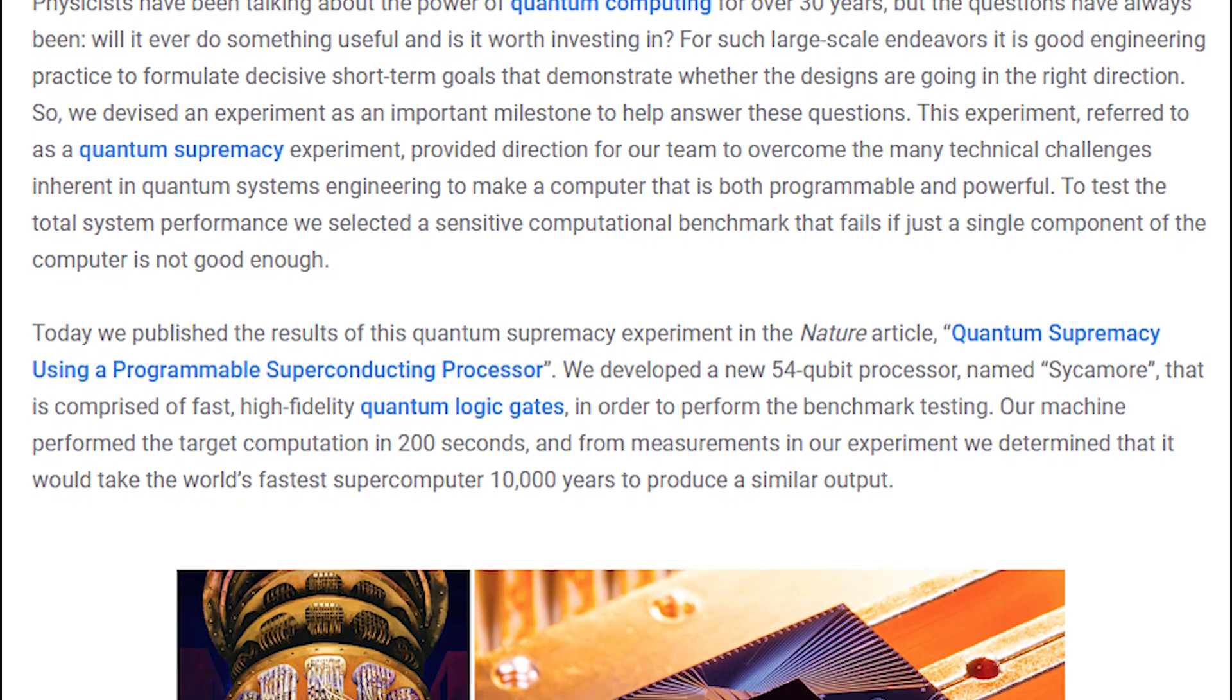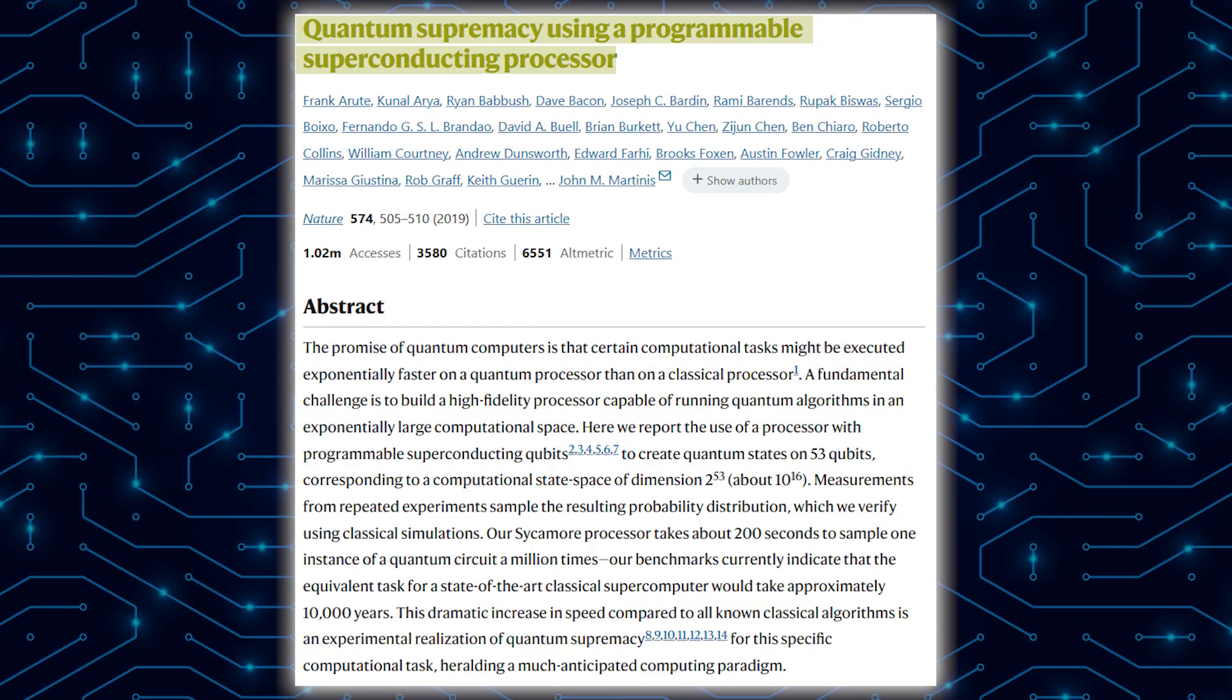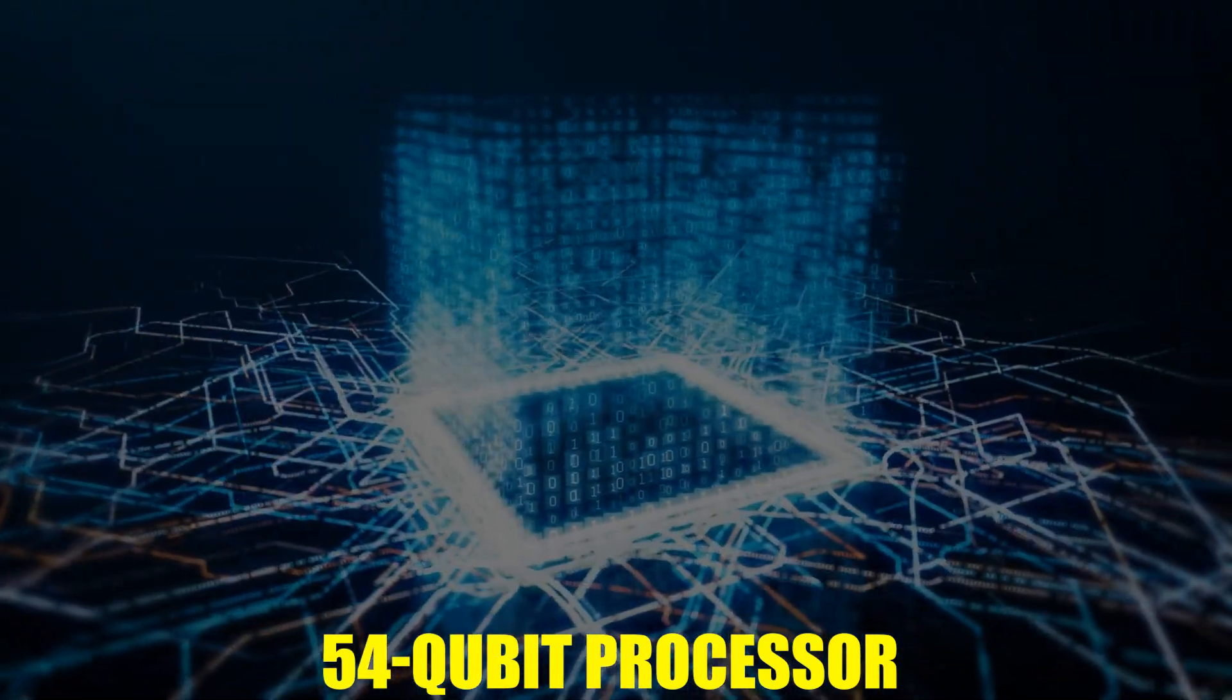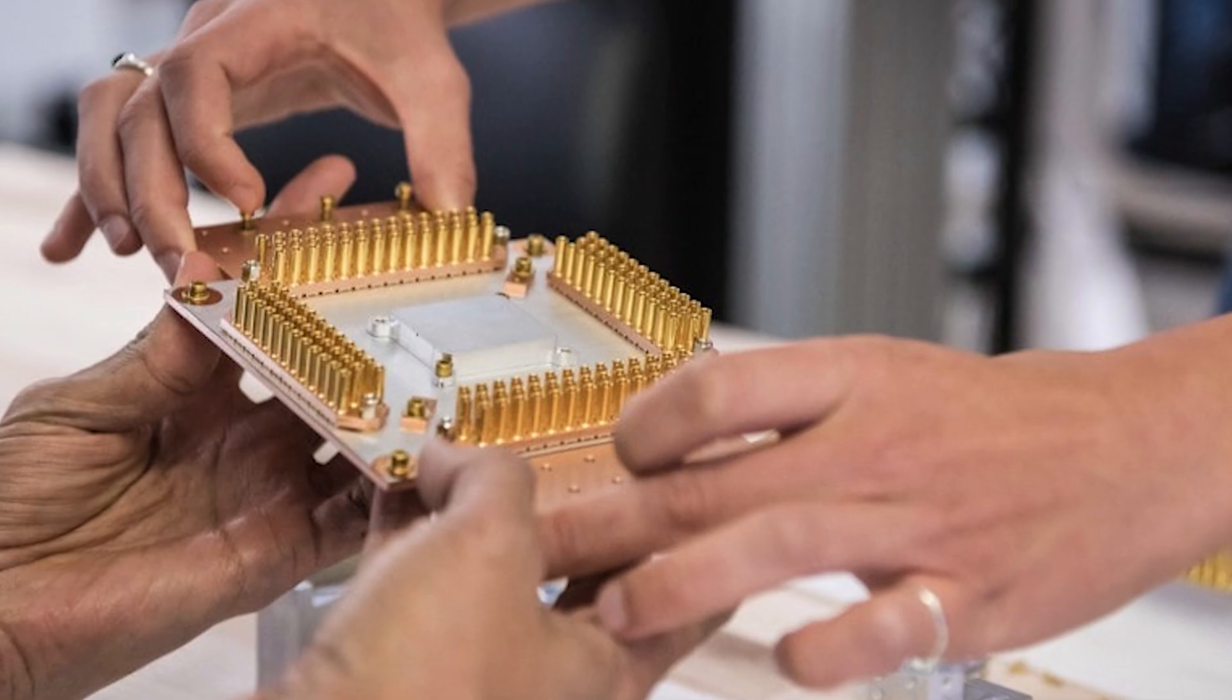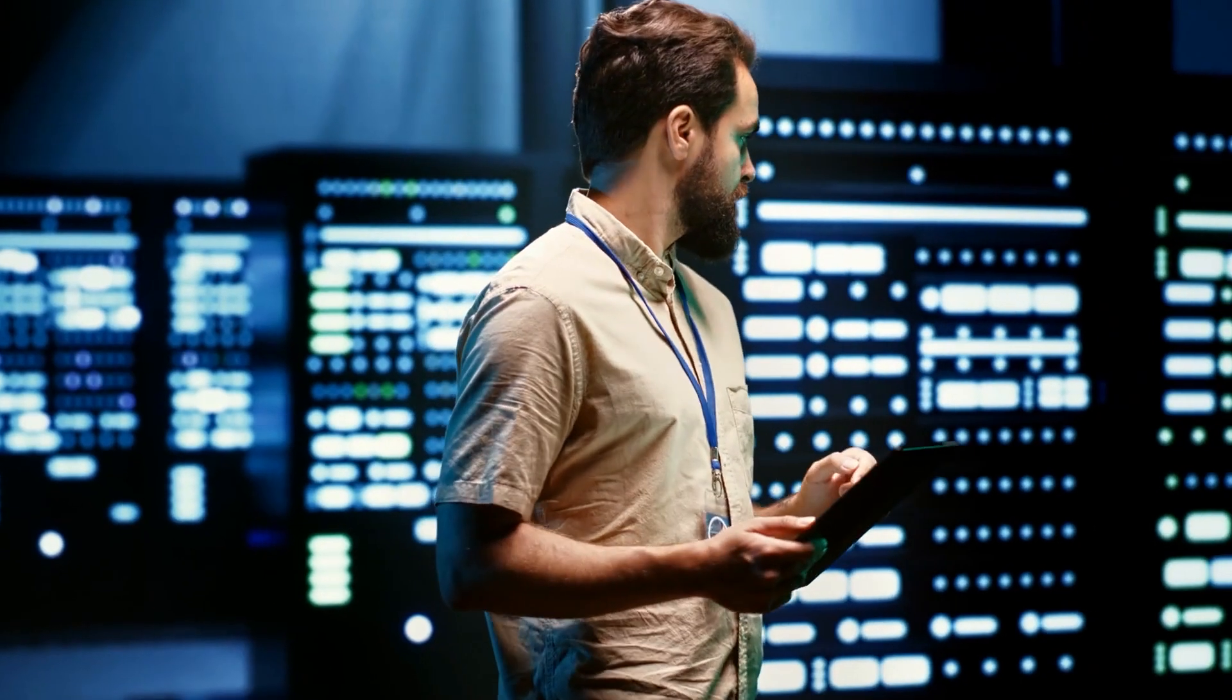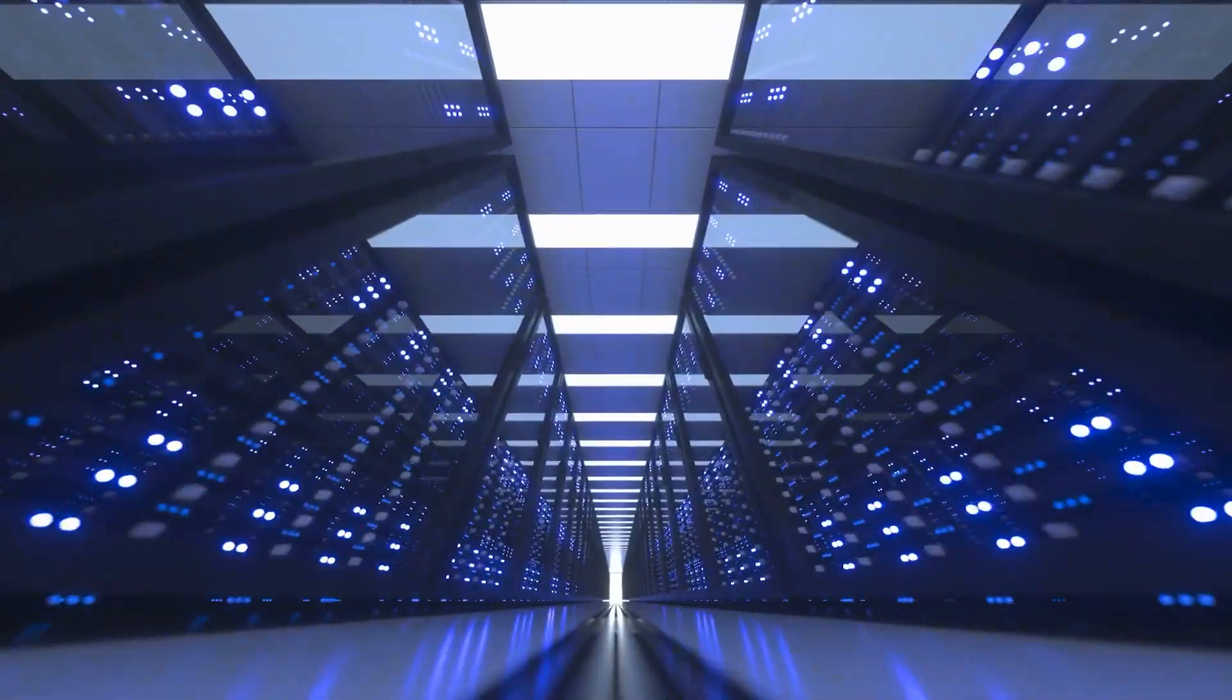In 2019, Google wrote a piece in Nature called 'Quantum Supremacy Using a Programmable Superconducting Processor' about the results of a quantum supremacy experiment. It made a brand-new 54-qubit processor called Sycamore to do the benchmark tests. It's made up of fast, high-fidelity quantum logic gates. The quantum computer did the required calculation in just 200 seconds. Based on the test results, it was calculated that the world's fastest supercomputer would need 10,000 years to reach the same result.